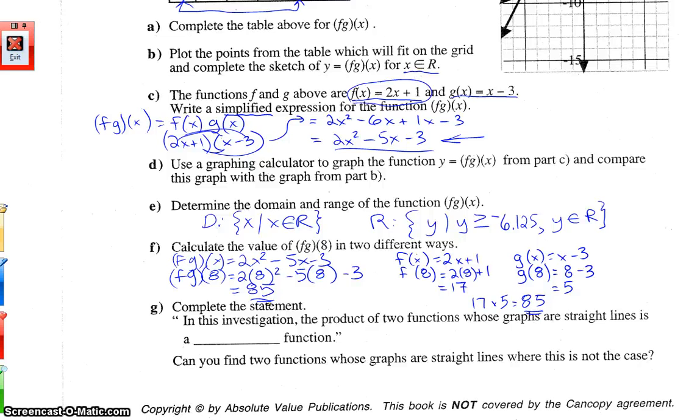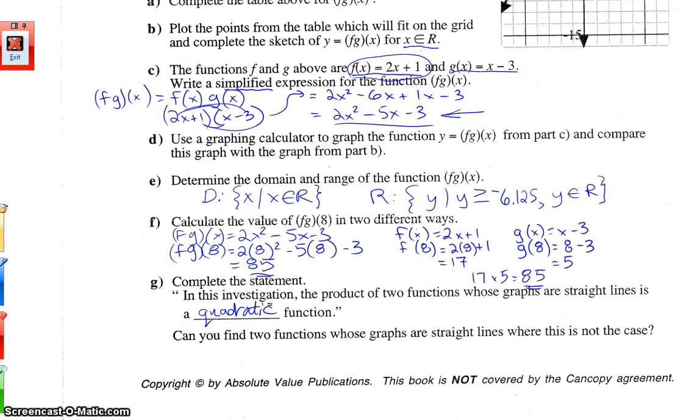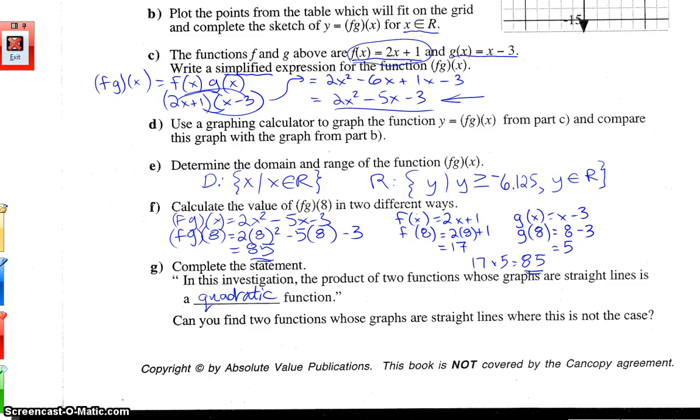Cool, so you can actually do that two different ways. Use the original or the simplified expression for the product. Whichever is easier, that's the way you want to go with, unless it's requested to do it a certain way. In this investigation, the product of two functions whose graphs are straight lines is a, we ended up with a parabola, so that would be called a quadratic function. Can you find two functions? We'll skip that one for the sake of time. Let's go to the next page.